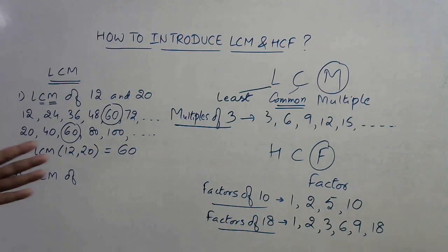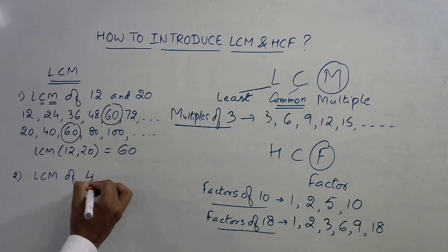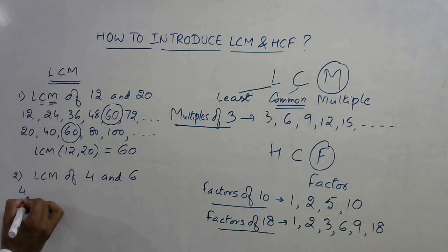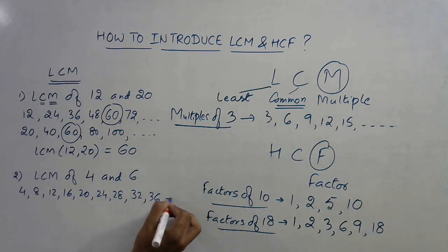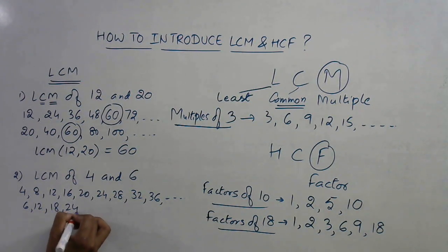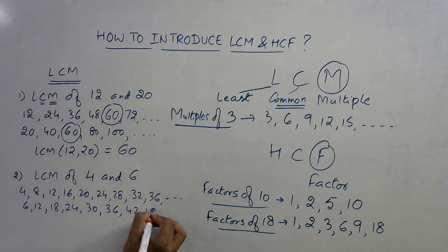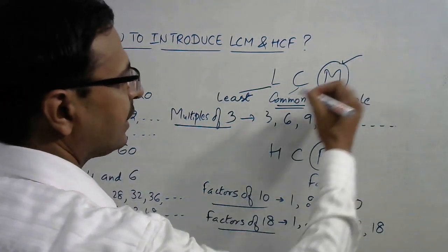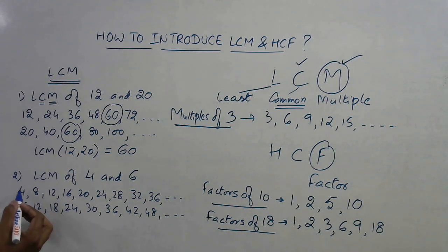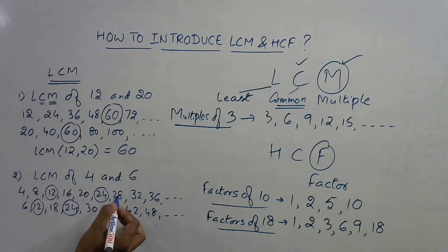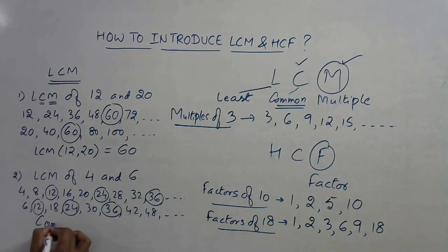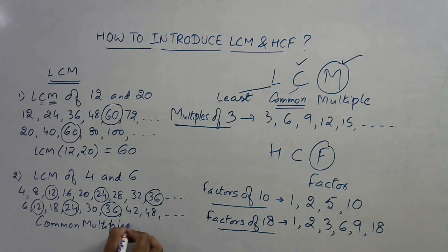Let's take an easier example: the LCM of 4 and 6. When introducing a concept, always start with very easy examples so students can comprehend them easily. Multiples of 4: 4, 8, 12, 16, 20, 24, 28, 32, 36, and so on. Multiples of 6: 6, 12, 18, 24, 30, 36, 42, 48, and so on. M is done — now we need C, the common multiples. 4 is not common, 6 is not common, 8 is not common, but 12 is common.